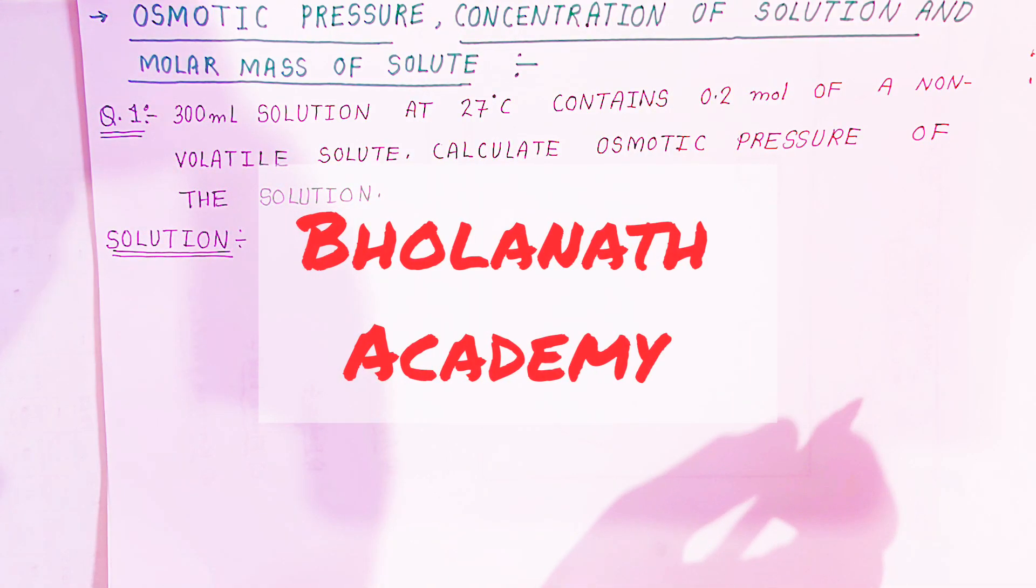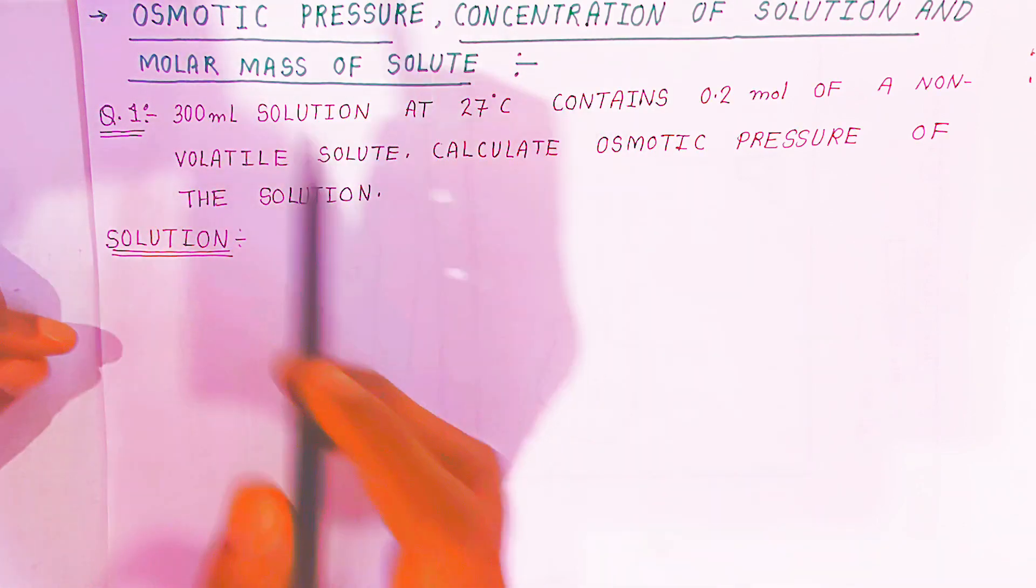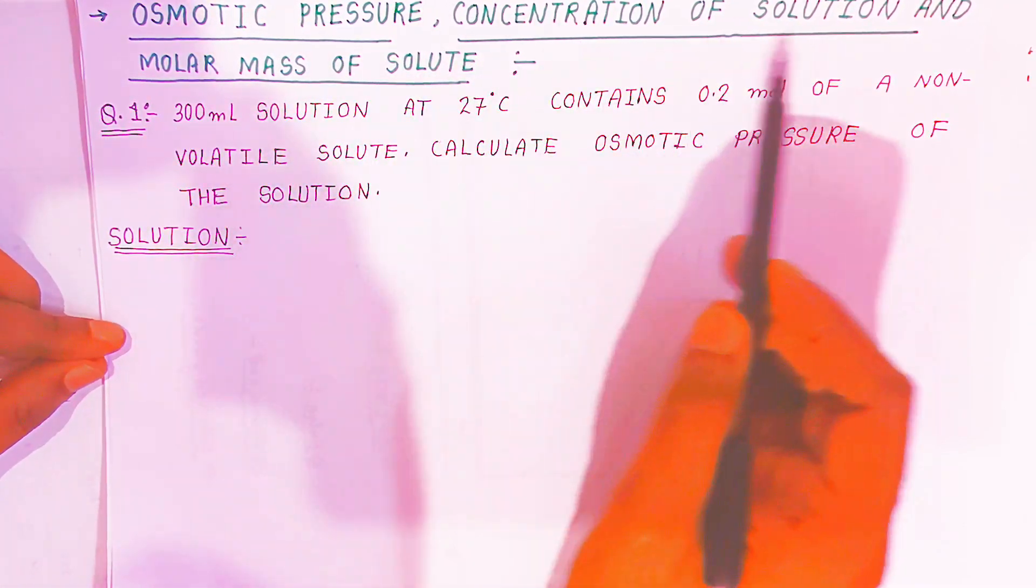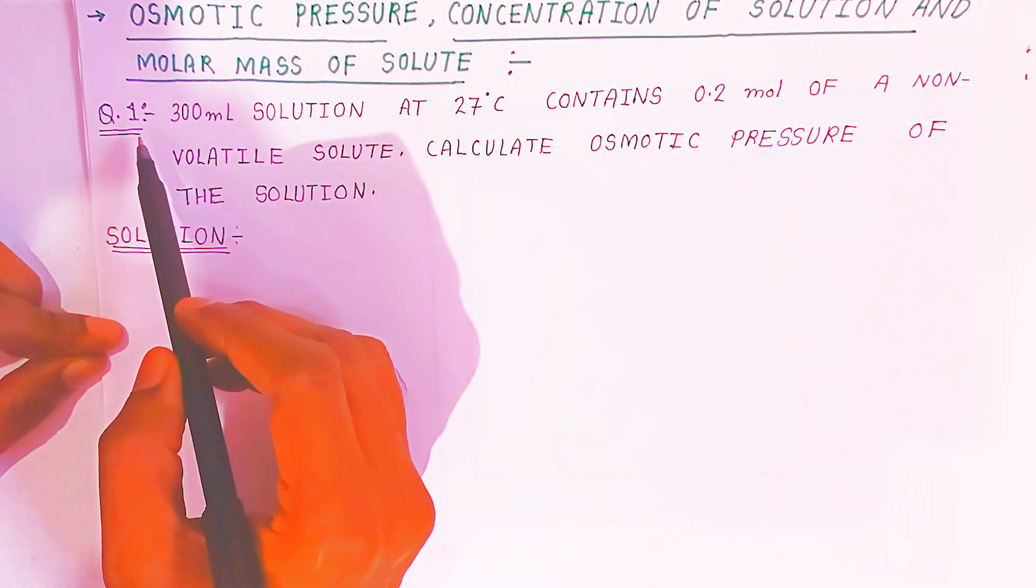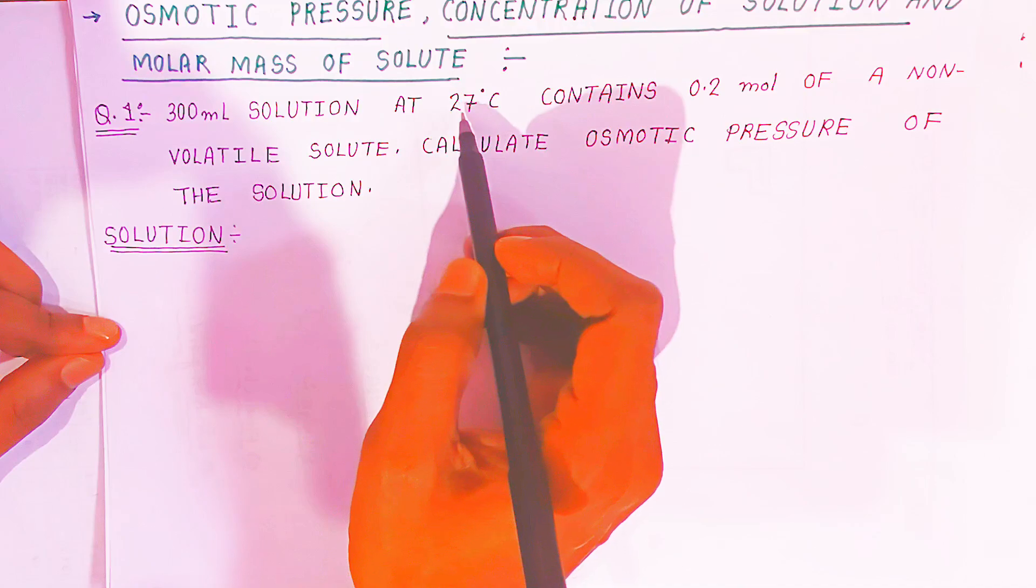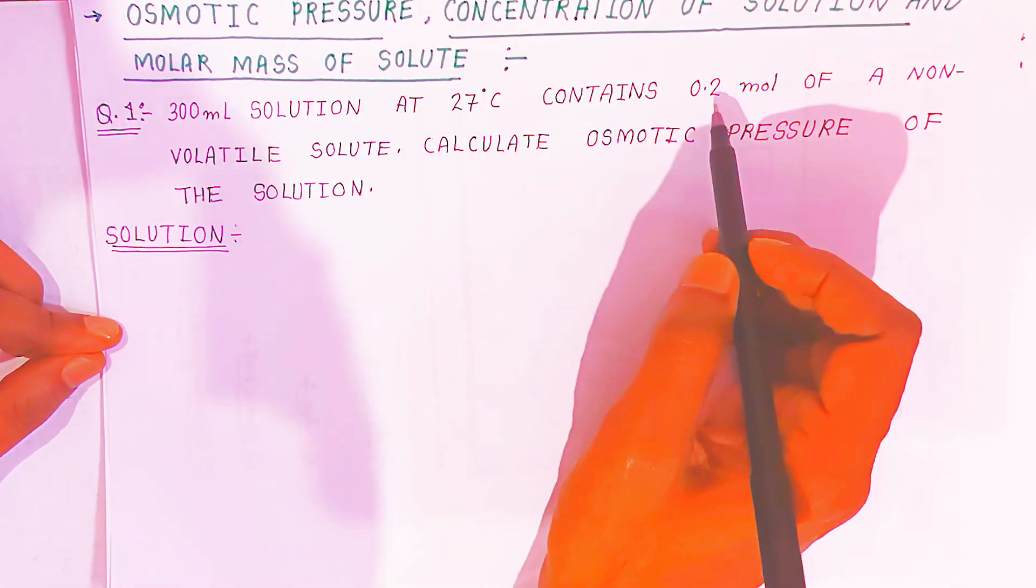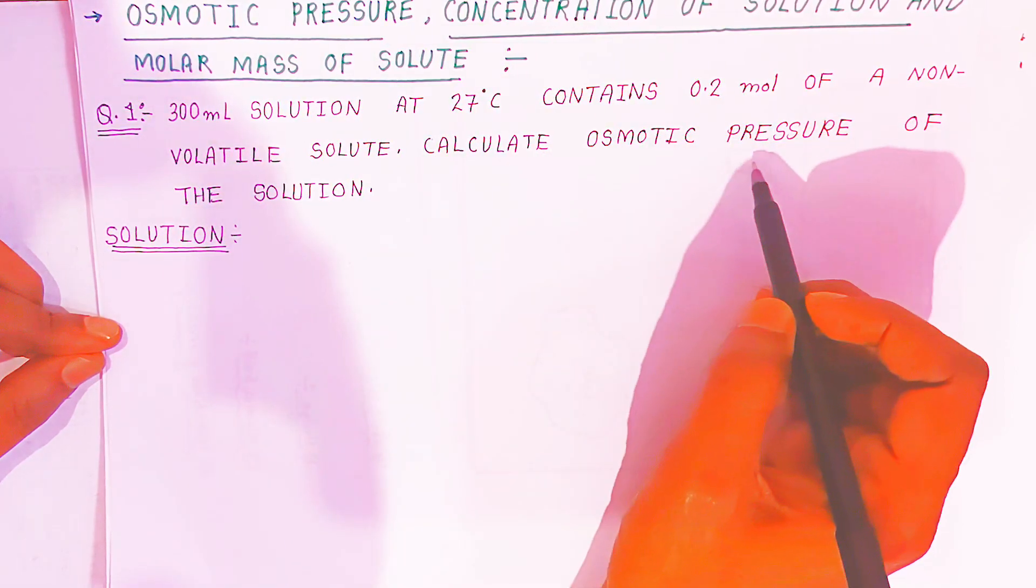Hello students, once again welcome to Bholanath Academy. In this video we are going to see a problem based on osmotic pressure, concentration of solution, and molar mass of solute. Problem 1: A 300 ml solution at 27°C contains 0.2 mol of a non-volatile solute. Calculate the osmotic pressure of the solution.